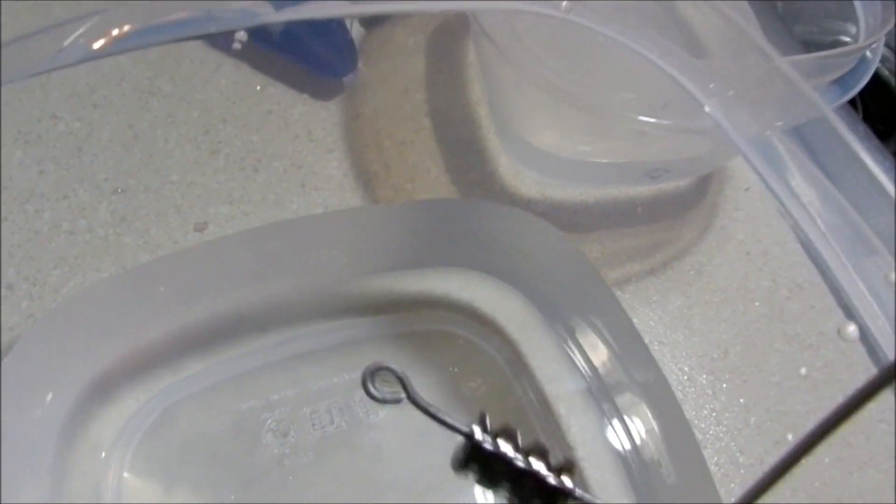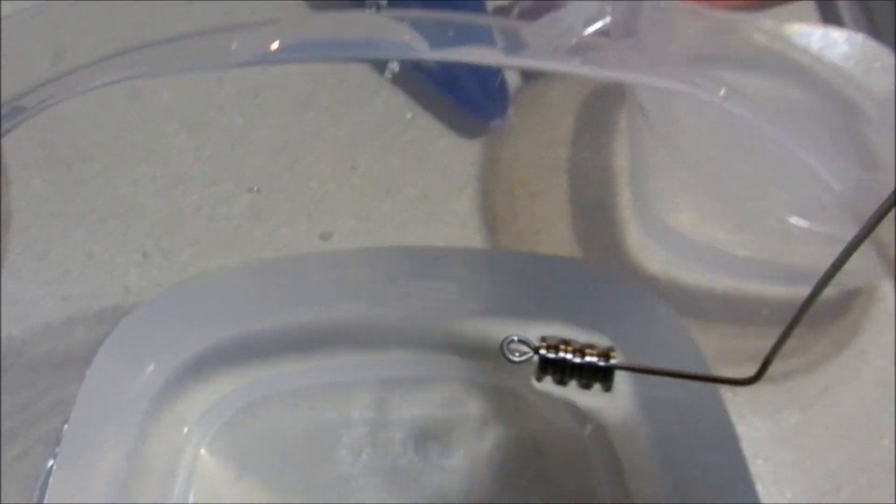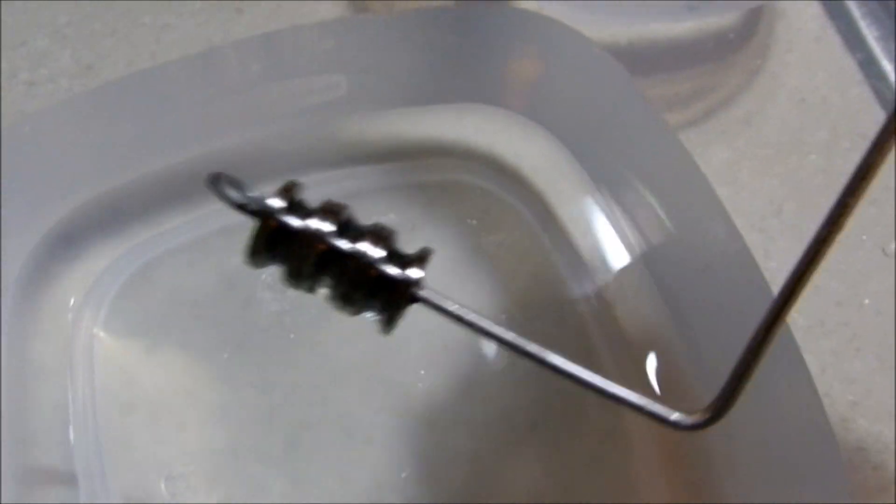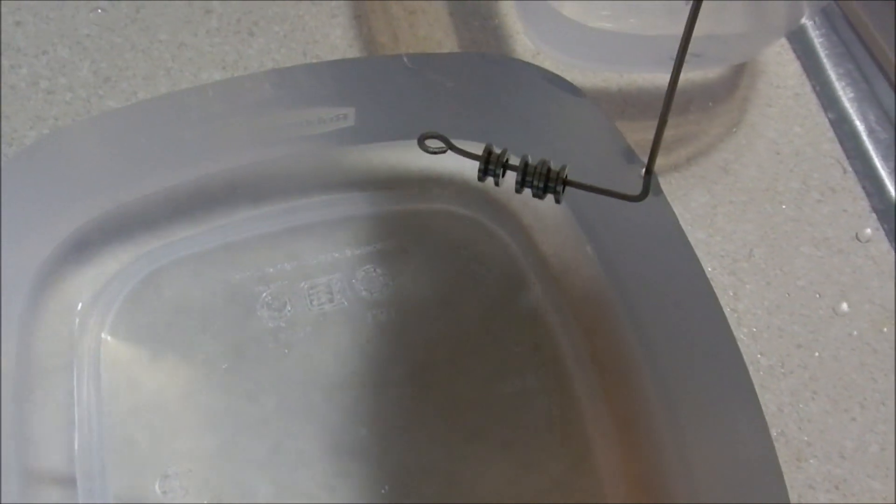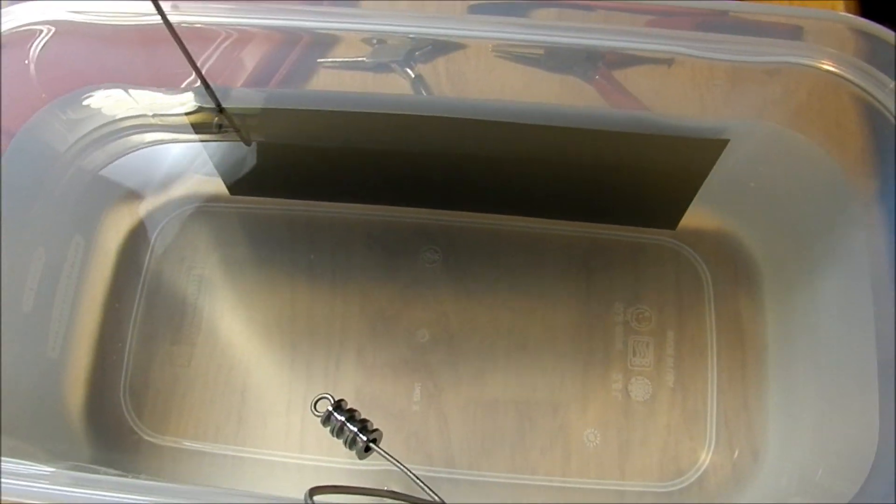And after I took it out the multi-etch, I have a distilled water right here. Quick rinse. And then I have some more distilled water over here. And that is what it looks like after etching. I do not see a difference. So this is going to go straight into the anodizing tank.